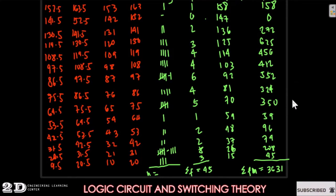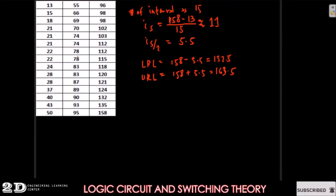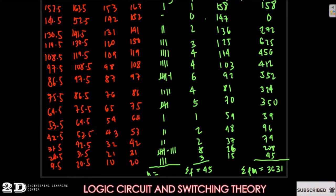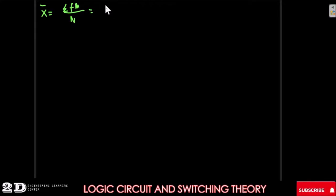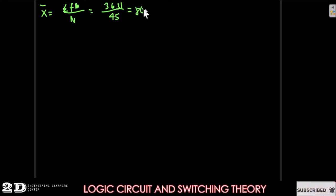Now we will get our mean. Our x̄ is equal to the summation of frequency times midpoint over the summation of frequency. Frequency times midpoint is equal to 3631 and our n is 45, so we divide 3631 by 45. Our mean is 80.69.